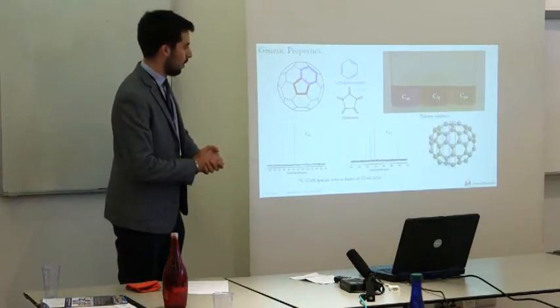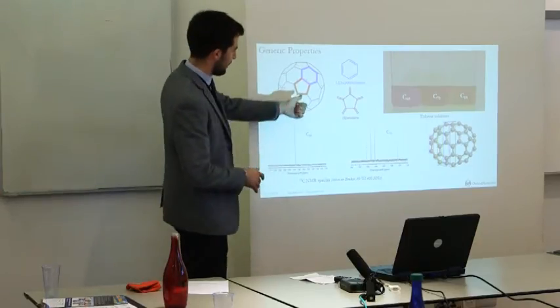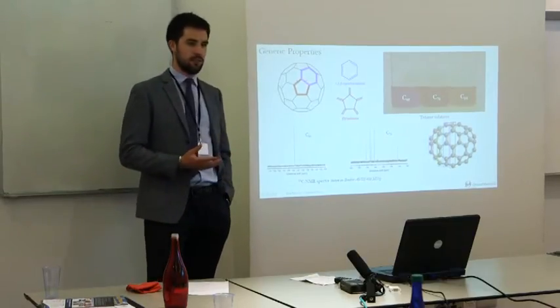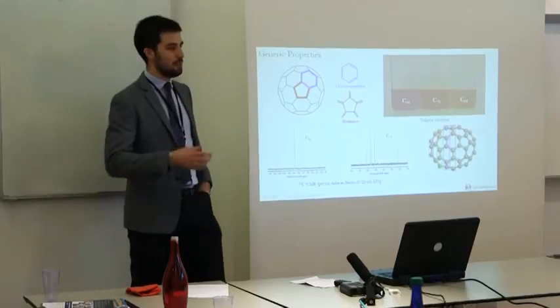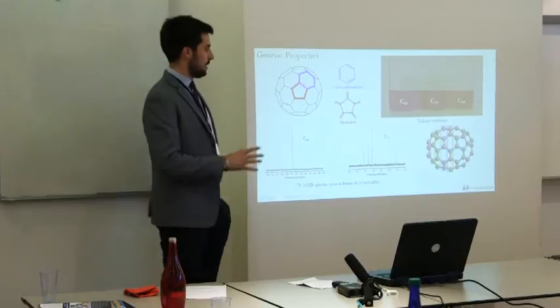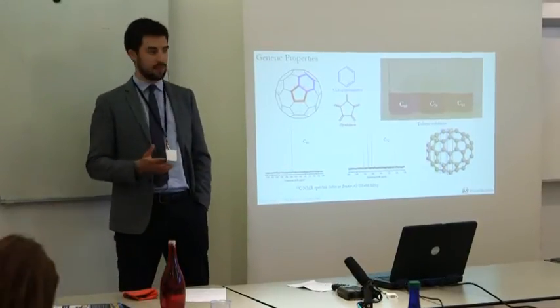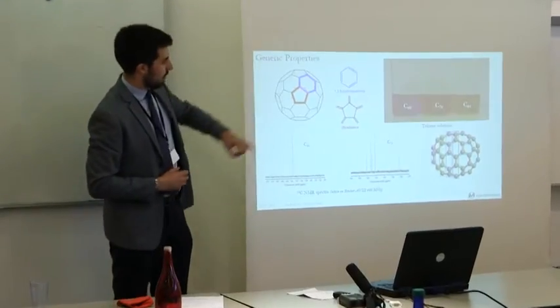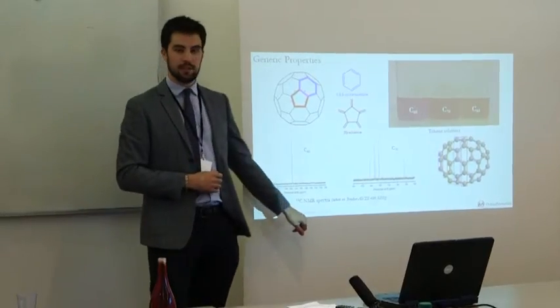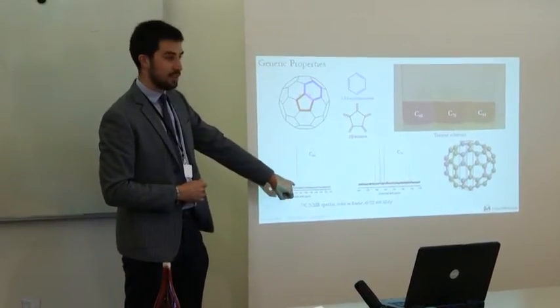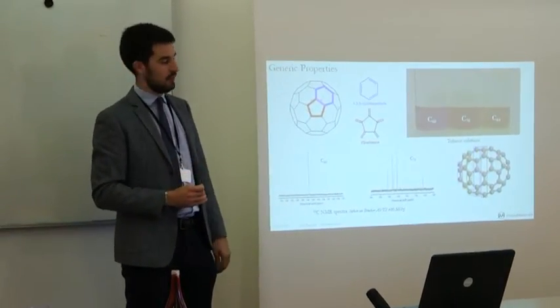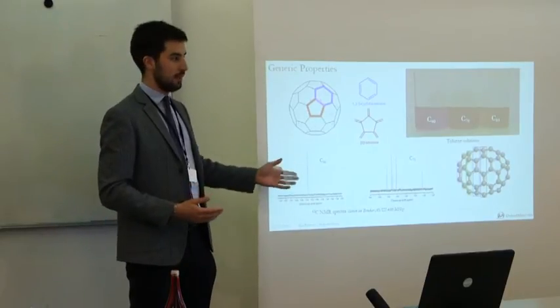Generic properties. Hopefully we've all seen what a buckyball or a fullerene looks like. The classic one is the 60 carbon cage. Fullerenes are actually a family of carbon materials. They can contain a number of carbon atoms. 60, 70 are the two most abundant. They're all made up of subunits of hexagons and pentagons. You can really beautifully see what C60 looks like in a nuclear magnetic resonance spectrum. This single peak shows that every single carbon environment in the C60 cage is the same. That's basically proof of its incredibly highly symmetric structure.